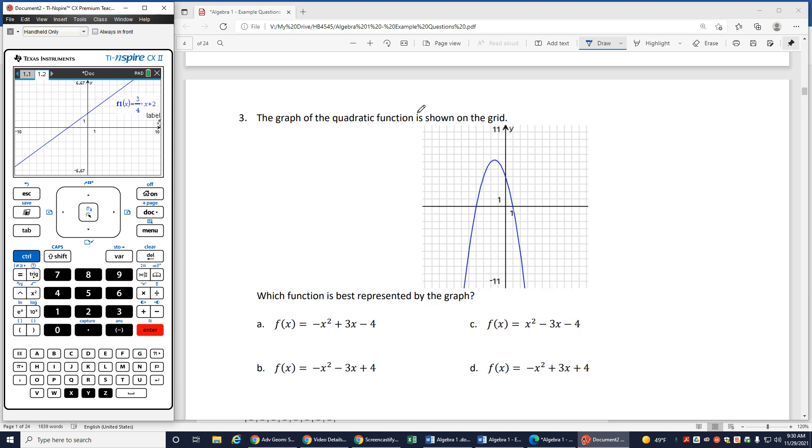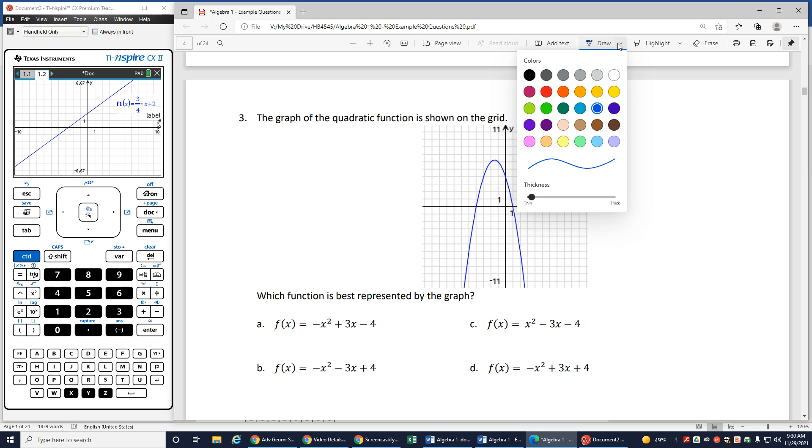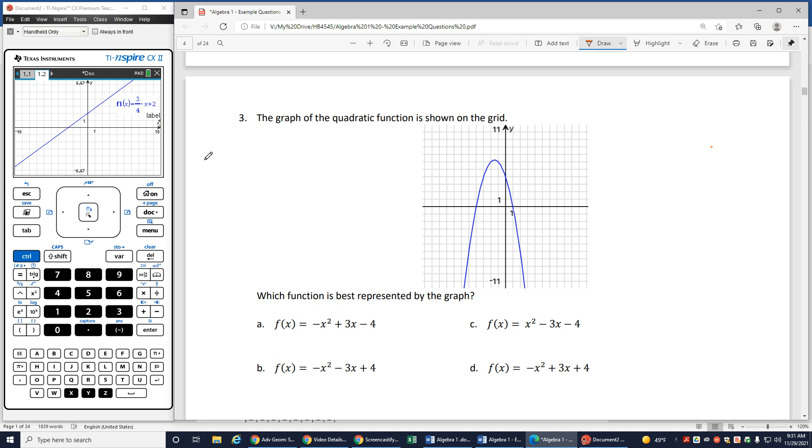Let's look at number 3. For number 3, I have a quadratic function shown on the grid. So I notice all my answers here are x squared. I can see it's opening downward. So again, if I wanted to do like I did on the last one, and I wanted to just eliminate some things. I'll switch up my color here. I know if it's opening downward in front of the x squared, I have to have a negative. So I know I'm definitely not going to be C because I'm going to be a negative.